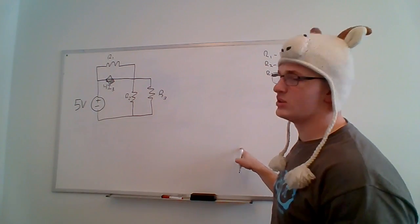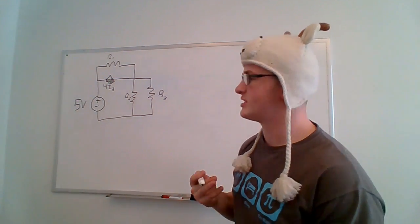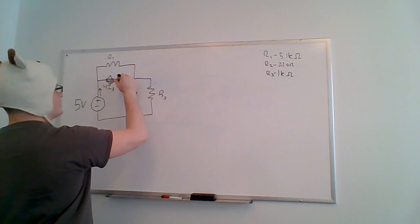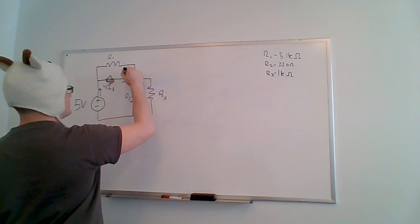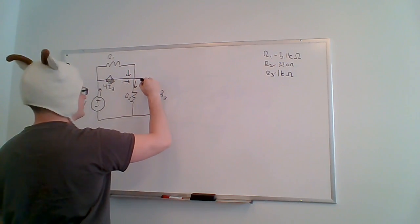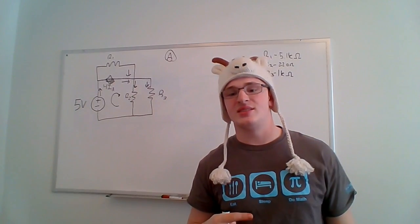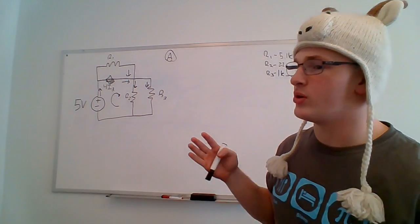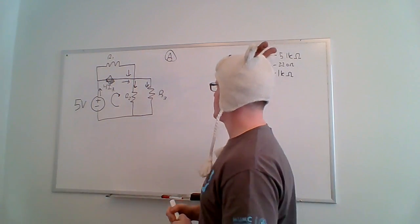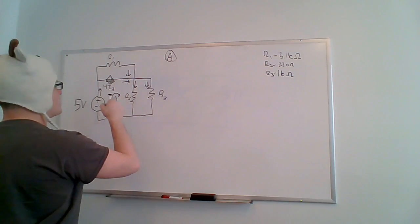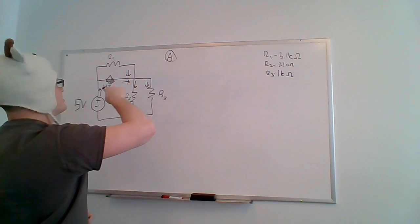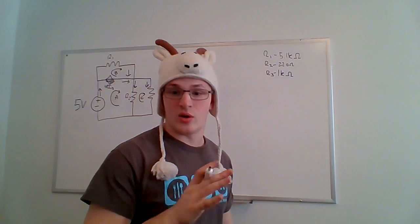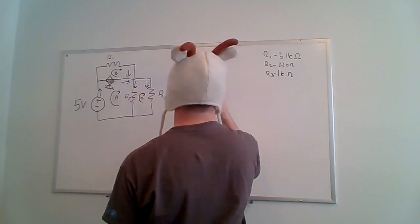Now we can use Kirchhoff's voltage law to solve this. Current will be flowing in this direction, this direction, back down here, and then down here. Kirchhoff's voltage law states that the voltages in a loop, when added together, sum to zero. We'll call this loop A, spinning clockwise. All loops have to spin clockwise in this situation.